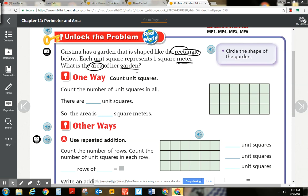One of the first ways is to count the number of unit squares in all. You can just count. You can count by ones. 1, 2, 3, 4, 5, 6, 7, 8, 9, 10, 11, 12, 13, 14, 15, 16, 17, 18. So there's 18 square units.